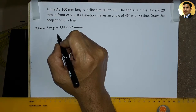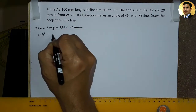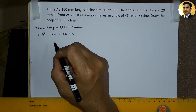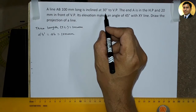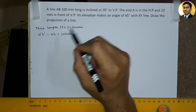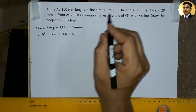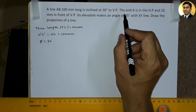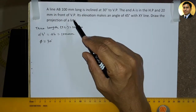हम true length को A'B' और A'B' line से designate करेंगे. So true length का vertical plane के साथ angle दिया गया है जो कि 30 degree है. So true length का vertical plane के साथ का angle हम φ से designate करेंगे. So φ is equal to 30 degree. इस line का end A है वो horizontal plane पर ही है और vertical plane से आगे की दिशा में है.